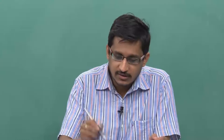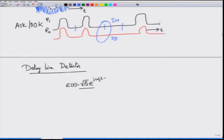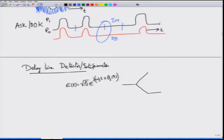Now let us look at a different mechanism or receiver topology called delay line detection or the delay line detector. What does this delay line detector do? I take the signal which I want to detect — the optical signal E(t), written as √Ps · e^(j(ωst + θs(t))), where θs would correspond to the modulation. This signal is input to a device called the delay line interferometer or delay line interferometric detector. You first split the signal into two parts and then delay one part by a symbol time Ts.